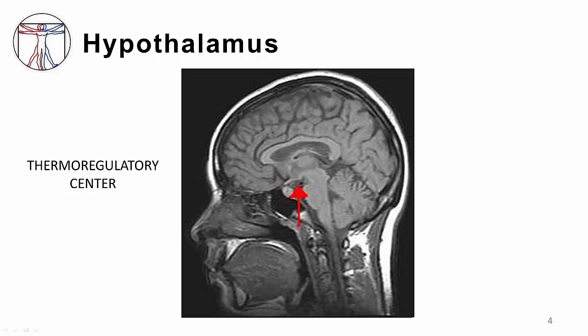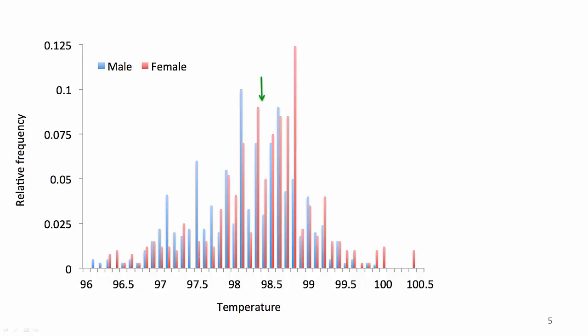Normal body temperature is generally considered to be 98.6 degrees Fahrenheit or 37 degrees Celsius. In reality, there is a rather wide spectrum in what is considered normal, depending on a number of factors. Normal temperature varies by individual and tends to follow a normal Gaussian distribution as illustrated here. Women tend to be around 0.2 centigrade higher than men, but this is by no means universal. Many patients will state that they are usually hotter or colder than 98.6, and there is some merit to this.